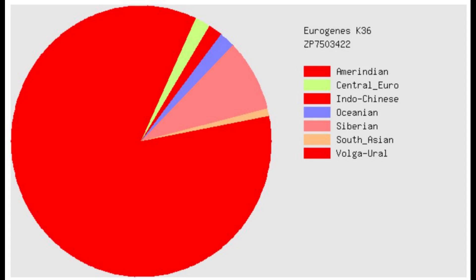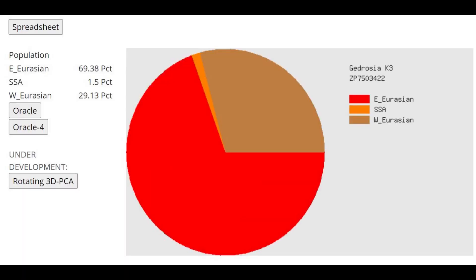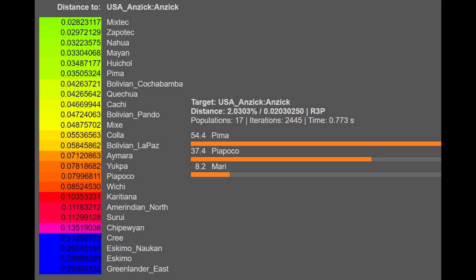This is his result with Eurogenes K-36. He's scoring overwhelmingly Amerindian. I wish they would split up the Amerindian component into more different ancestries in American natives. With Gidrozia K-3, he's actually scoring around one third West Eurasian, which is very interesting — it's due to the Cro-Magnon, due to the ancient North Eurasian admixture.